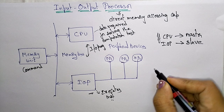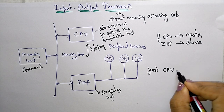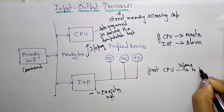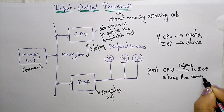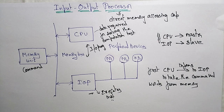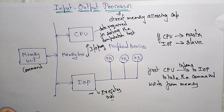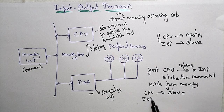The CPU informs the IOP to take the command words from memory in order to perform the required operation. The command words themselves indicate what operation the Input-Output Processor has to perform. Whenever the CPU issues signals to the Input-Output Processor, the CPU becomes the slave and the IOP becomes the master.